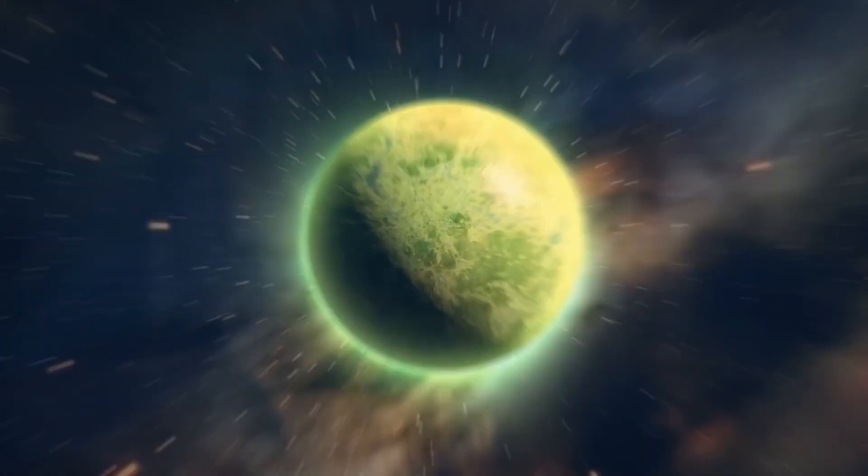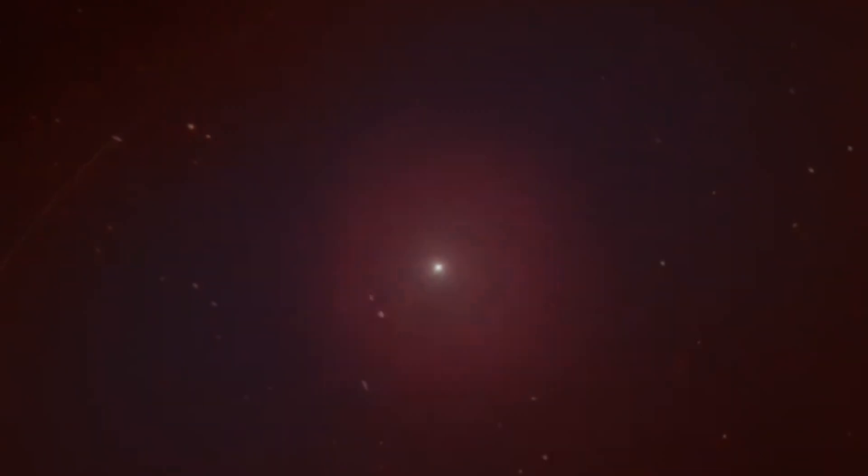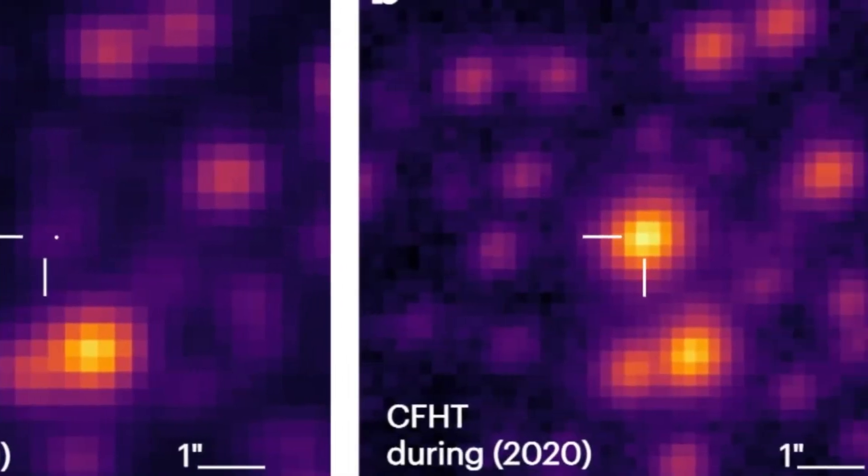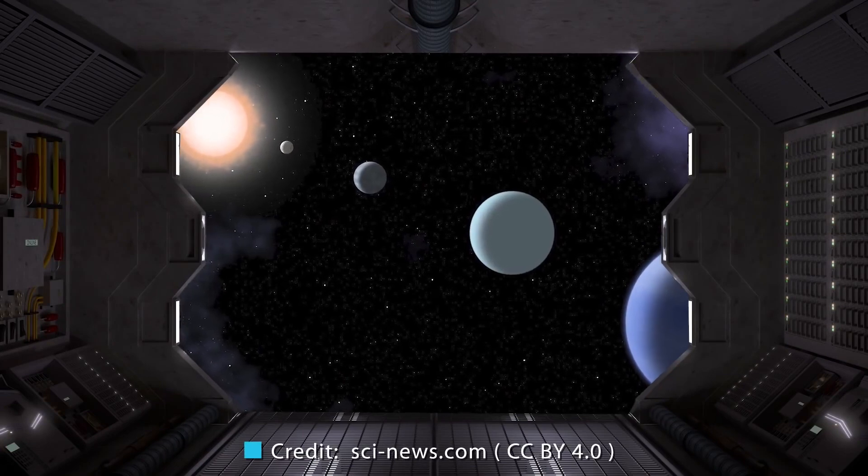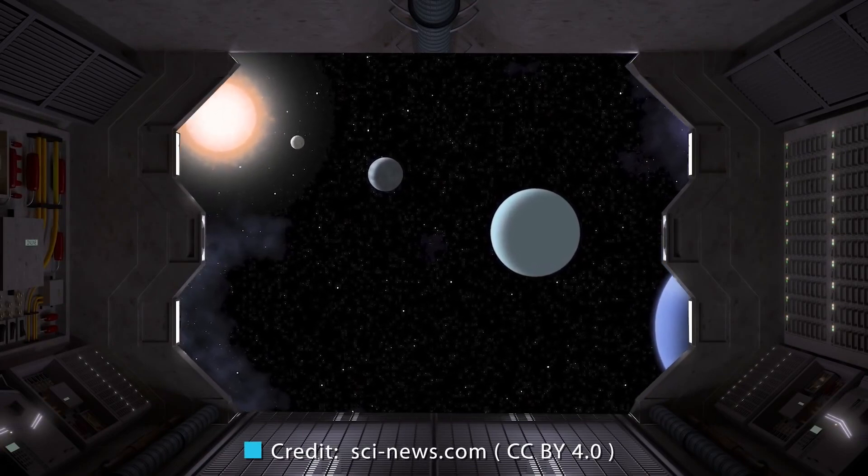When stars like our sun exhaust their nuclear fuel, they swell into red giants, shedding their outer layers before collapsing into dense, faint white dwarfs. This process unfolded in the system we're examining today.